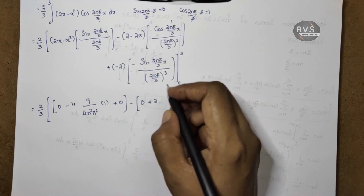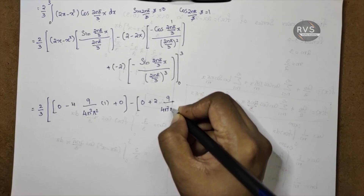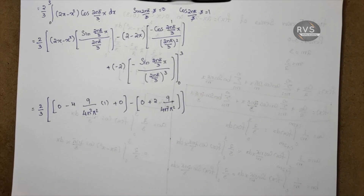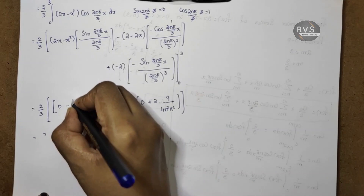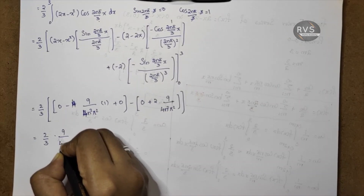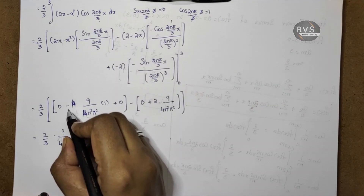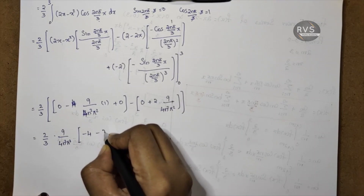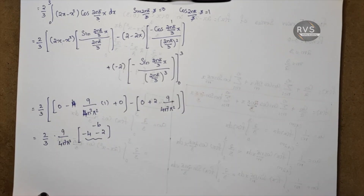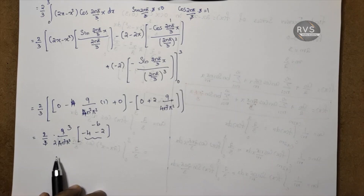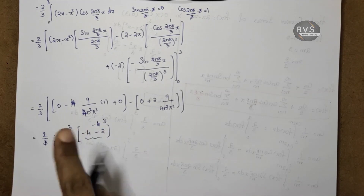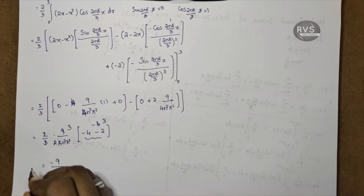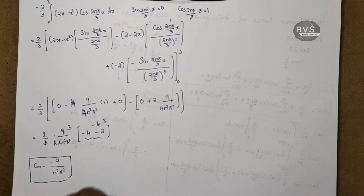Taking the reciprocal of (2n pi by 3) squared gives 9 by 4n squared pi squared. So we have 2 by 3 into 9 by 4n squared pi squared, multiplied by minus 4 and minus 2 giving minus 6. Simplifying: 9 and 3 cancel to give 3, and 2 and 4 cancel to give 2. So 2 by 3 into 9 by 4 gives 3 by 2, and 3 into minus 3 gives minus 9. Therefore an is equal to minus 9 by n squared pi squared.